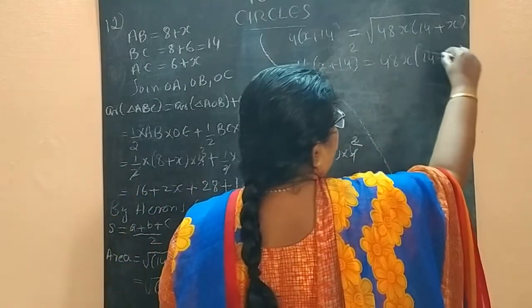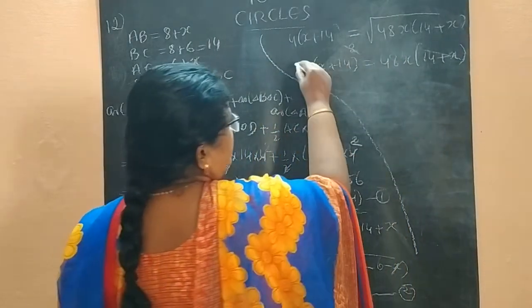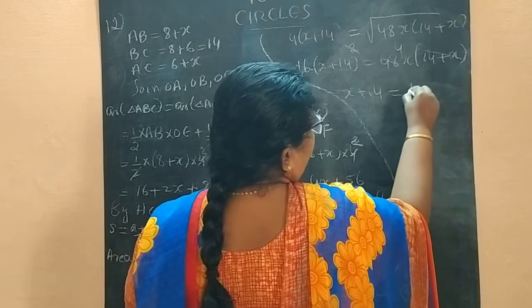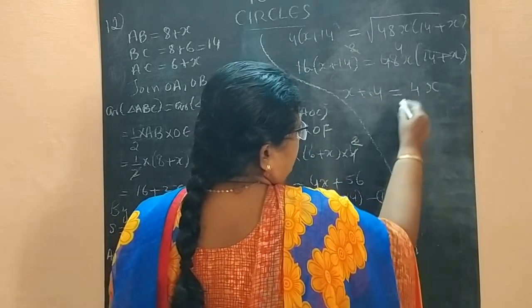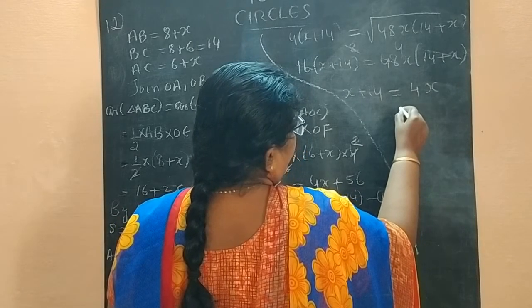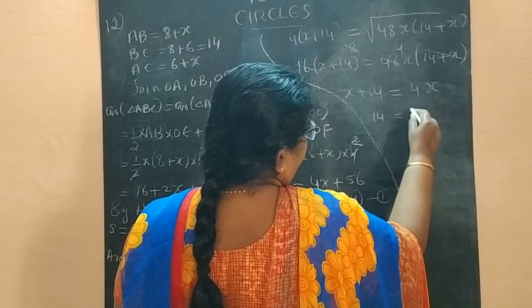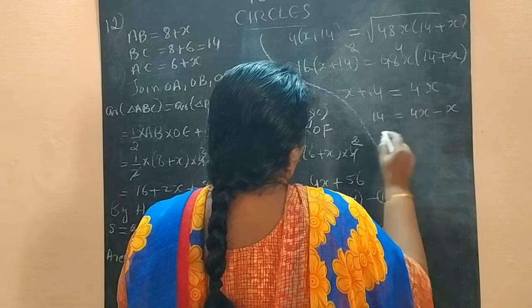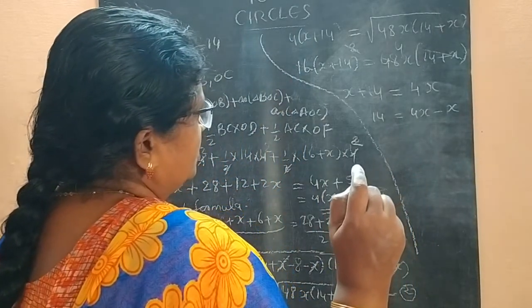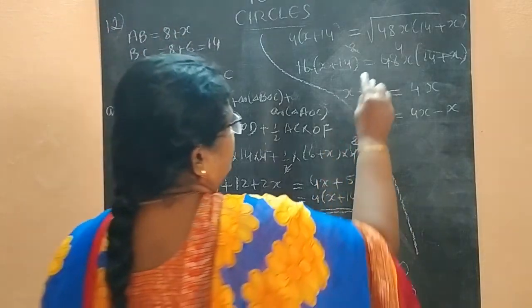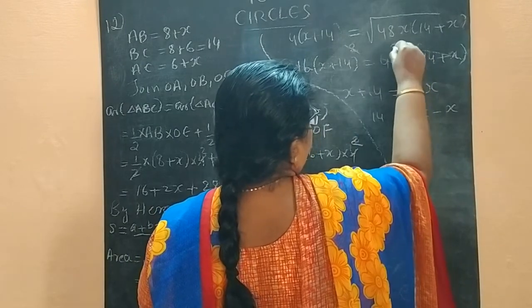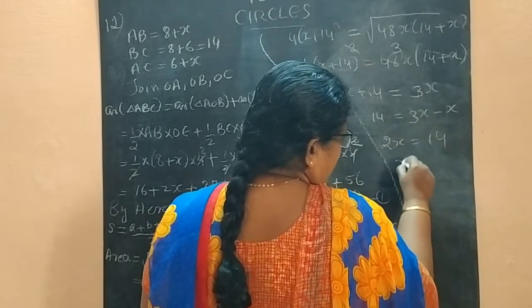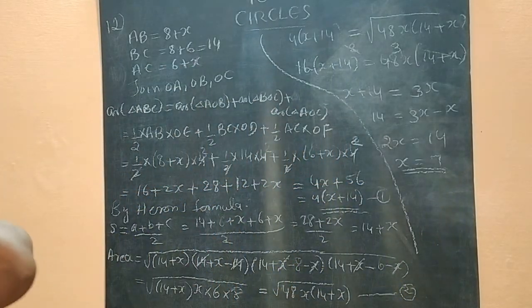After canceling (14+X) from both sides and simplifying 48/16 = 3: X + 14 = 3X. Rearranging: 14 = 3X − X = 2X. Therefore X = 7.